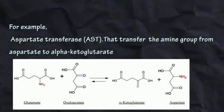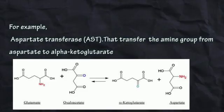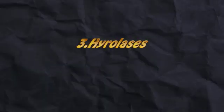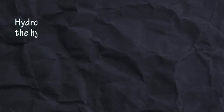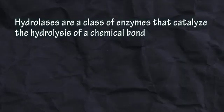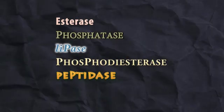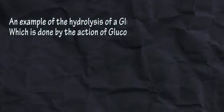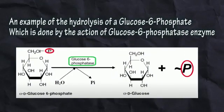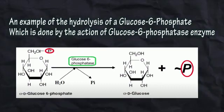For example, aspartate transferase transfers the amine group from aspartate to alpha-ketoglutarate. The third type is Hydrolases. Hydrolases are a class of enzymes that catalyze the hydrolysis of a chemical bond. Hydrolases include esterase, phosphatase, lipase, phosphodiesterase, and peptidase. An example is the hydrolysis of glucose-6-phosphate, carried out by glucose-6-phosphatase enzyme.